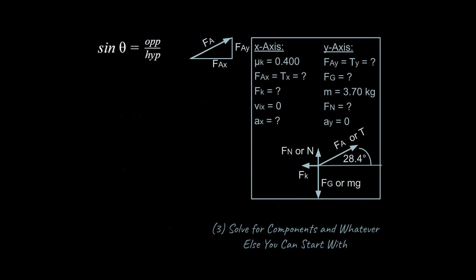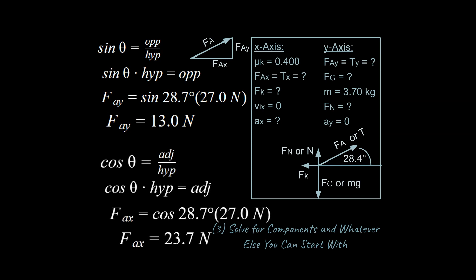One thing we can do is we know that we can take this vector over here, this force applied, and we can make it into the hypotenuse of a right triangle, and we can break it down and solve for Fax and Fay. We do know this angle here, 28.4. Our third strategy is we're going to solve for components and whatever else you can start with. We definitely can break that down into components, and I'm going to go ahead and update this with my numbers. I'm updating my list as I go with more information. This is a systematic way of filling out information for the problem so that you don't get overwhelmed and can take this step by step.